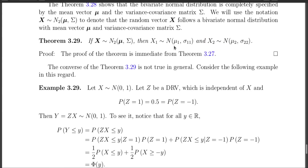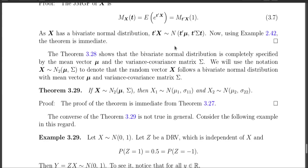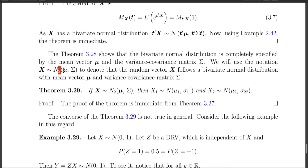The bivariate normal distribution is completely specified by its mean vector mu and variance-covariance matrix sigma. We use the notation that X follows N2(mu, sigma), where mu is a 2×1 vector and sigma is a 2×2 matrix.